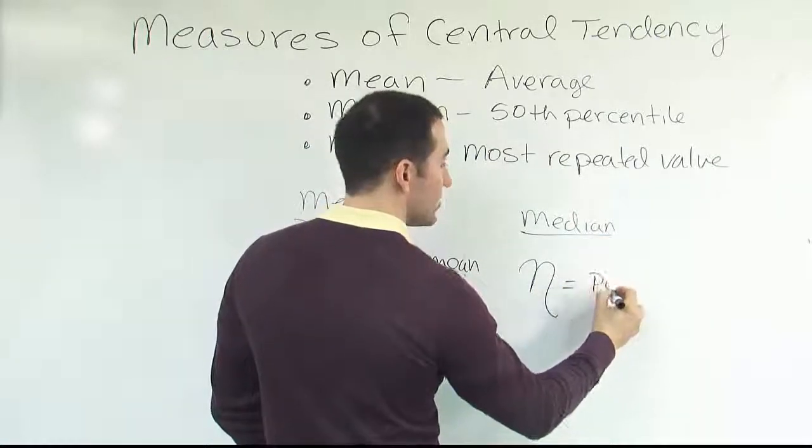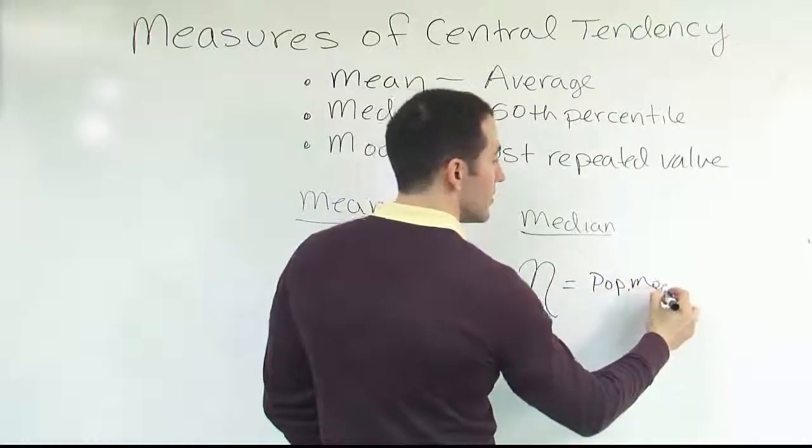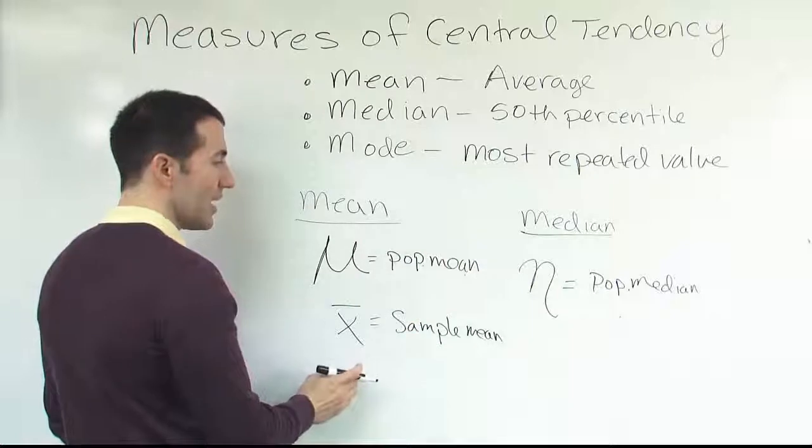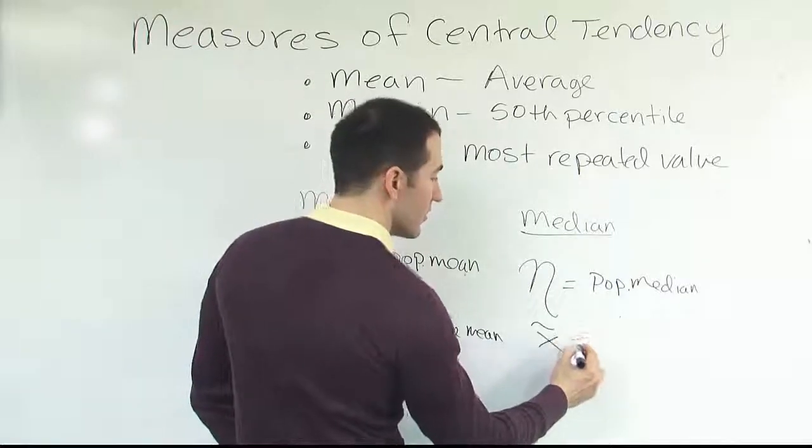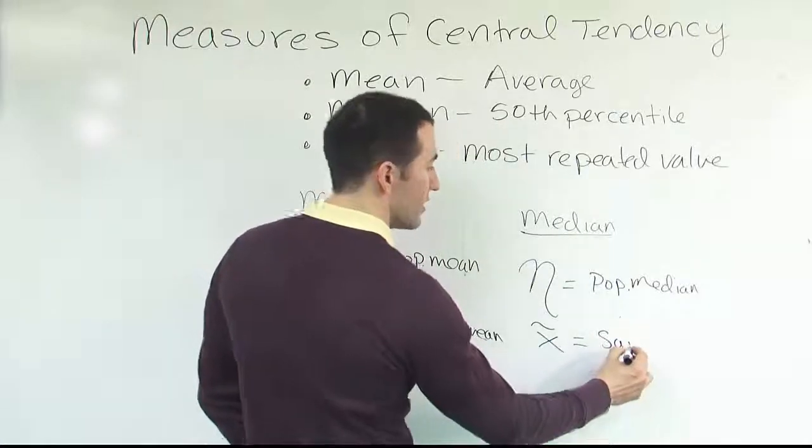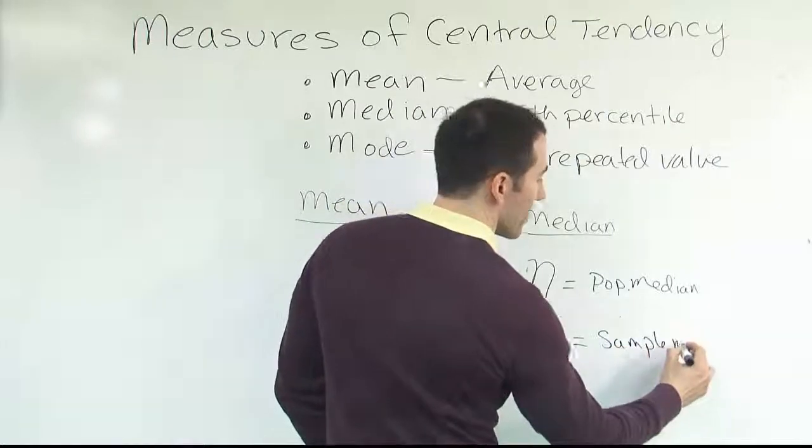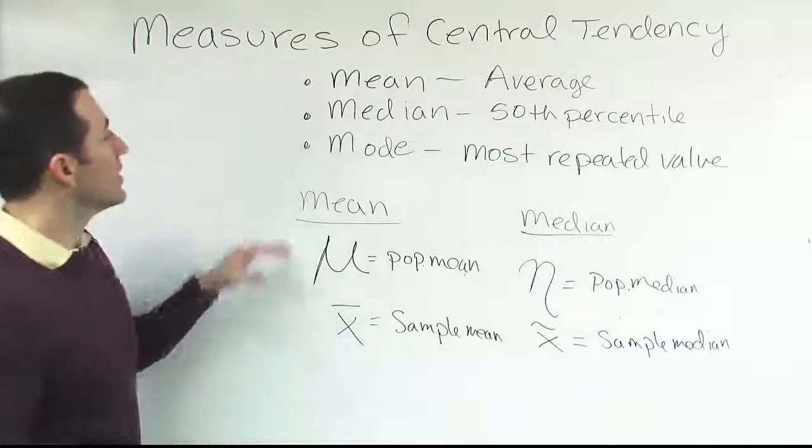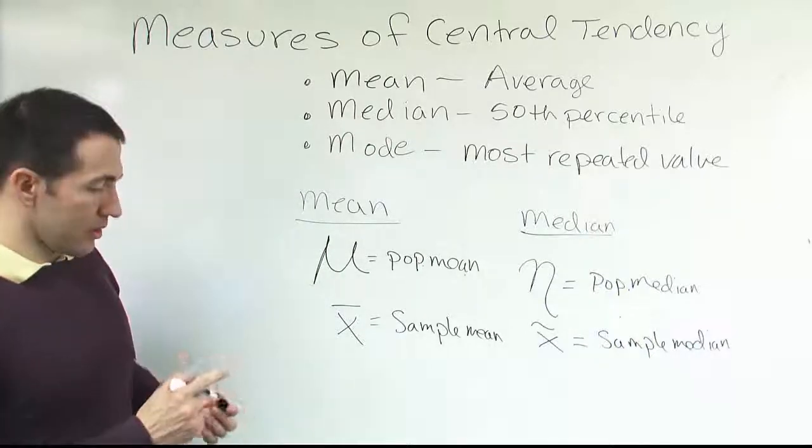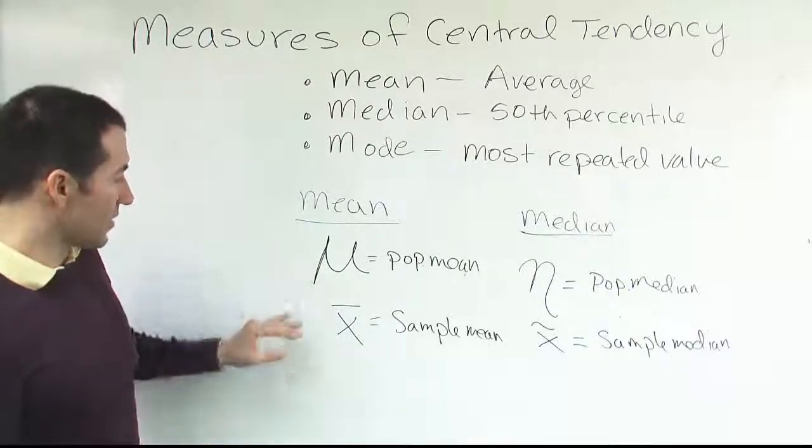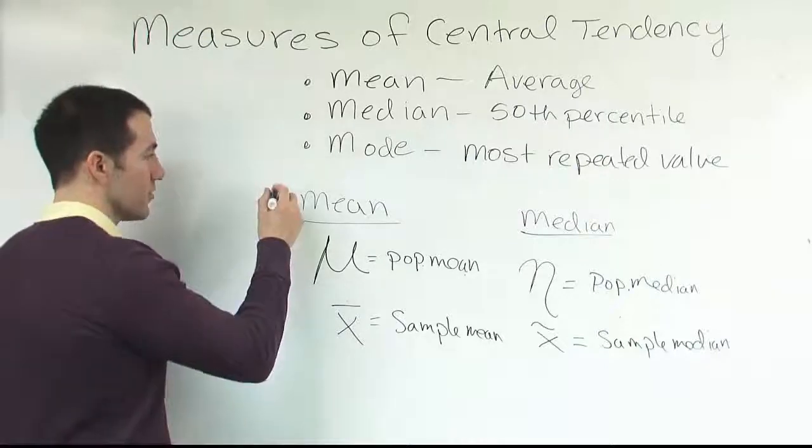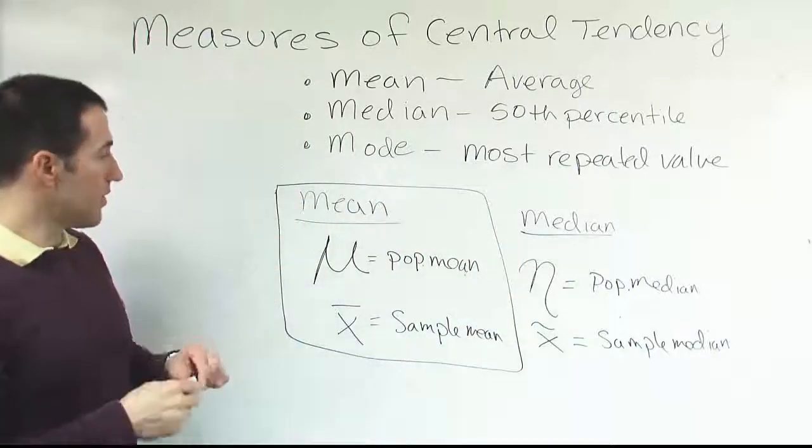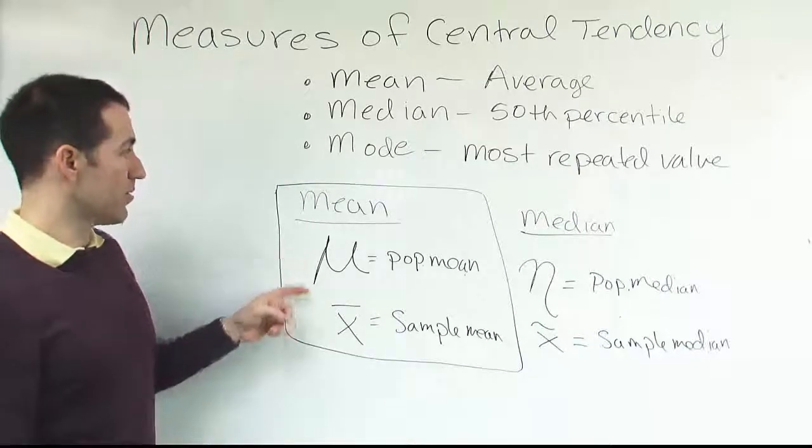For the median, generally the population value is the symbol eta. So it's the population median. Again, a Greek symbol eta to represent the median. And then for the sample value, we use x tilde as the sample median. Okay. So those are the symbols. And for mode, we won't get to worry about the symbol for that. The ones, in fact, the ones that are most commonly used in the course are going to be these symbols. You won't really use the median very much either. But this is the pair of symbols that are going to be most useful to us.